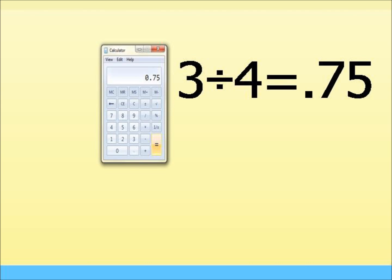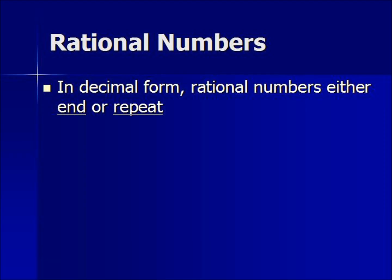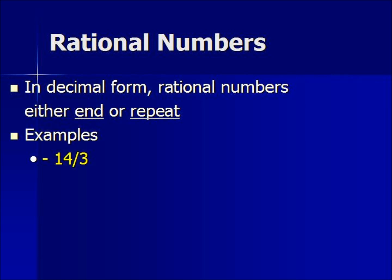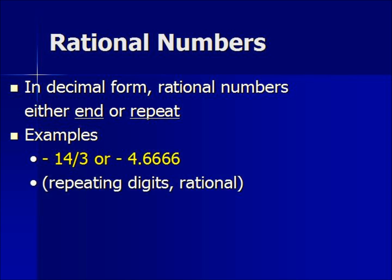Let's look at another example. We have negative 14 divided by 3. In decimal form we get negative 4.66666. This number repeats in decimal form, so it's rational.